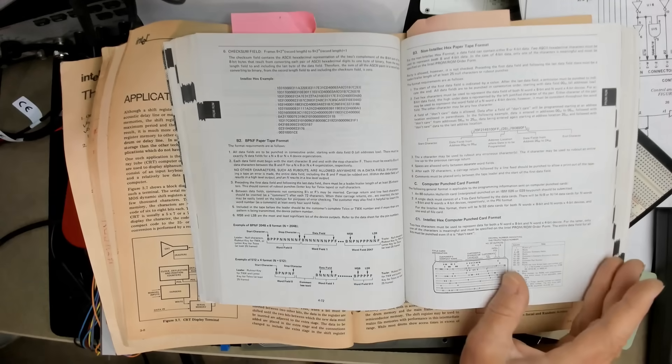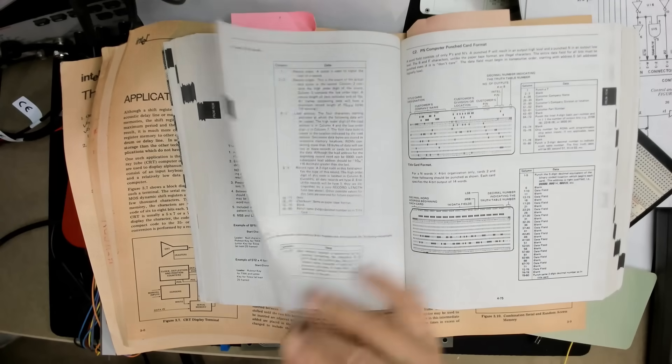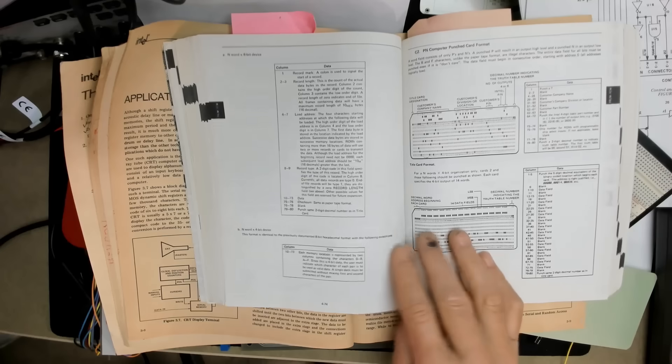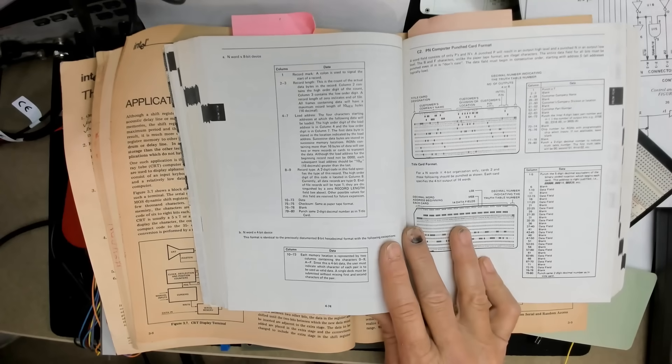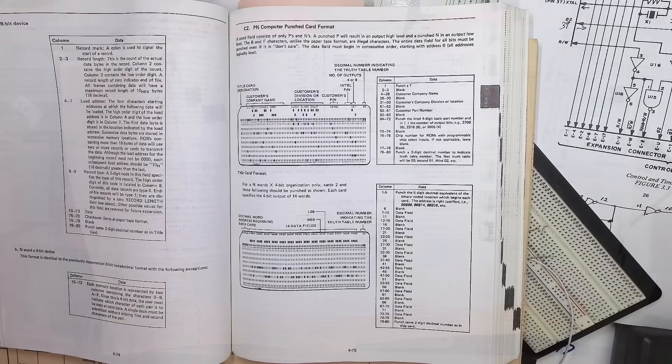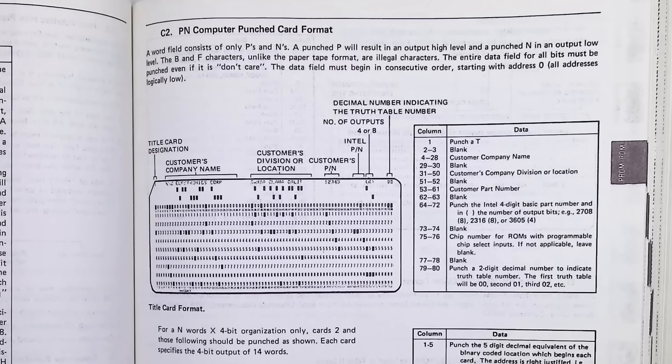Now if punch cards were used, then it was called the PN format because the framing characters B and F were dropped. The first card had to be a title card, had the company name and stuff like that. And then because of the potential for cards to be mixed up, each of the data cards started with the decimal starting memory address for that card.